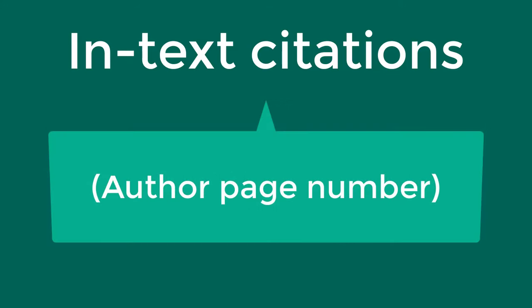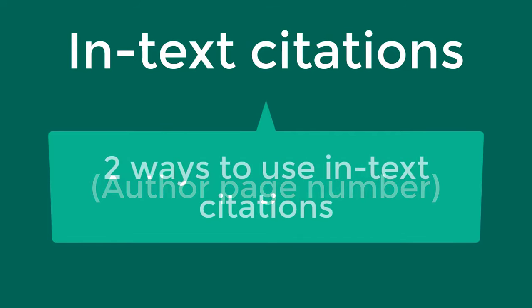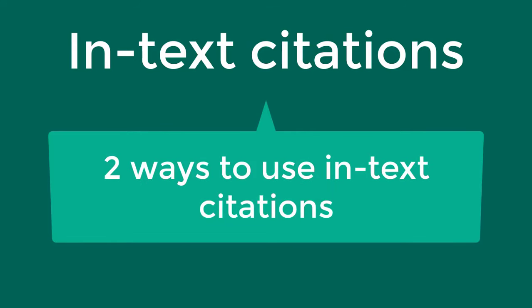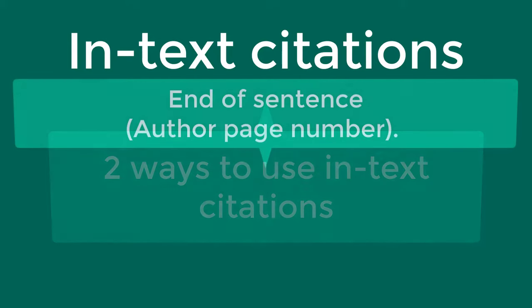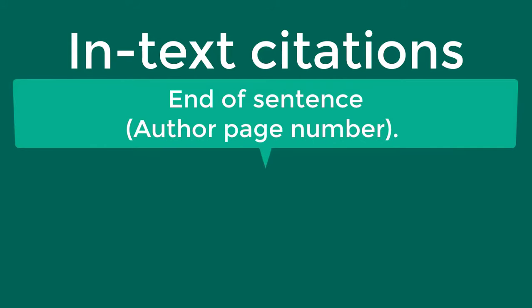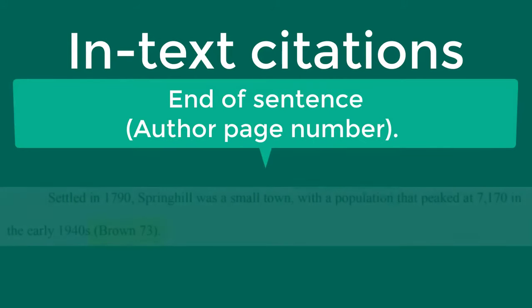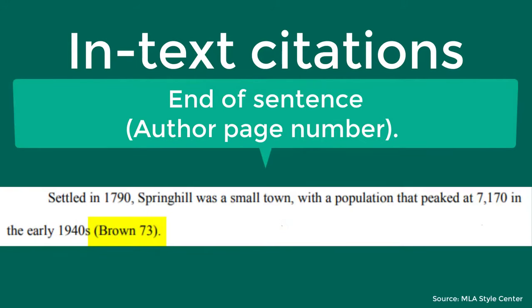MLA in-text citations include the author's last name and the page number if available. There are two ways to use in-text citations. The first way is to put the citation at the end of the sentence, where the whole citation is in parentheses.